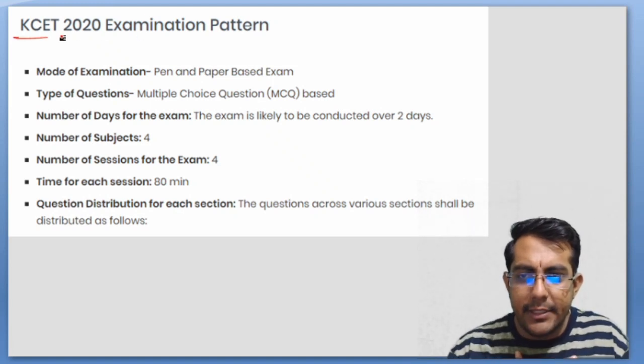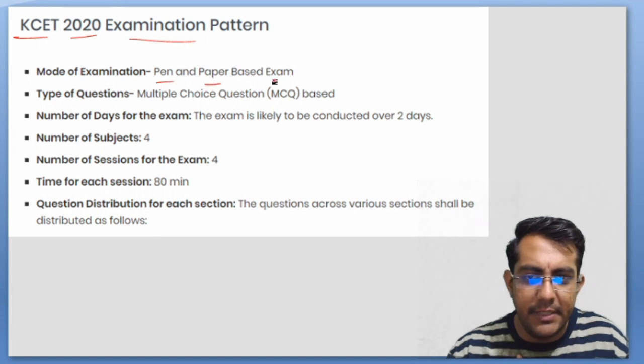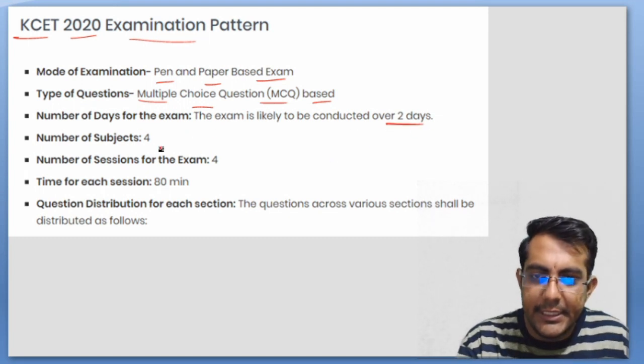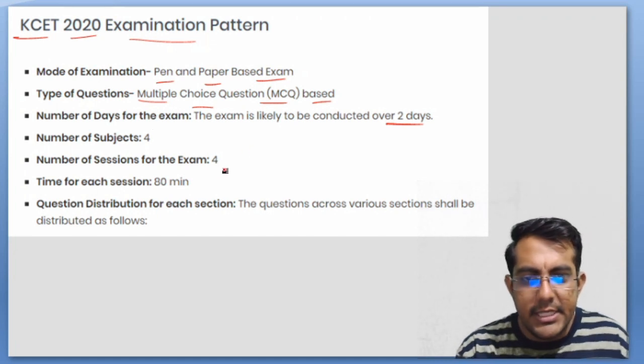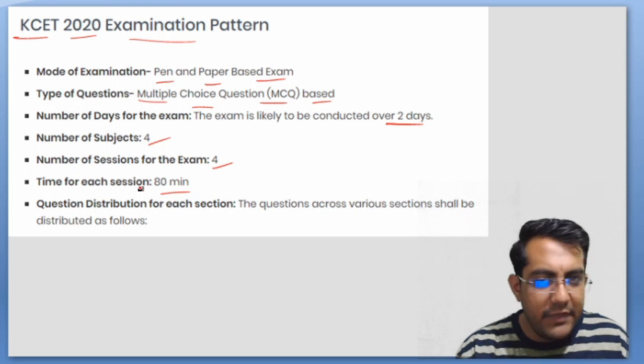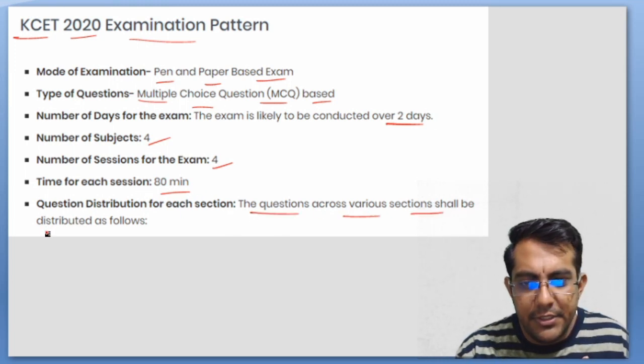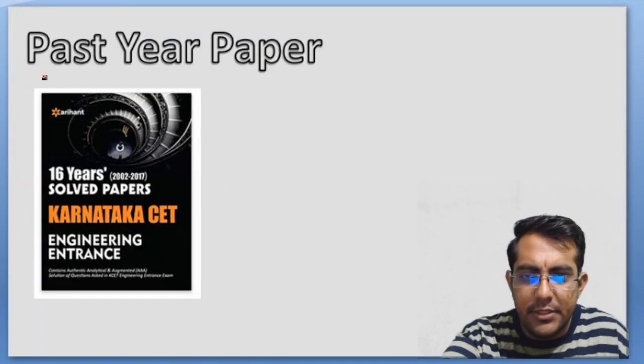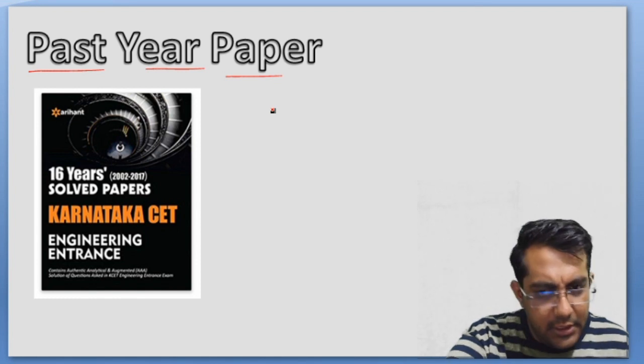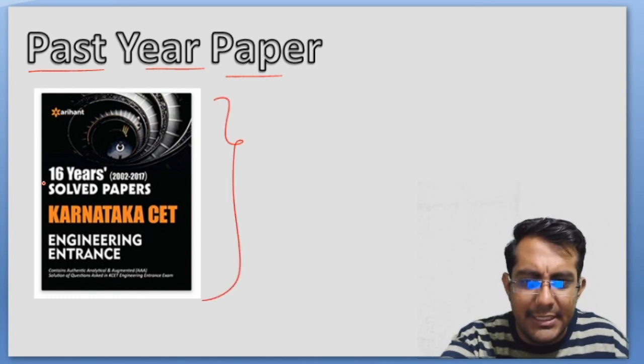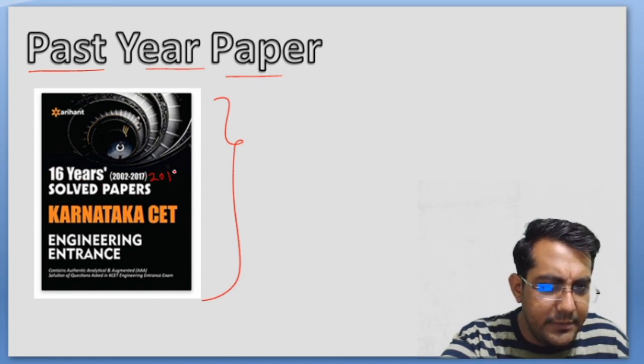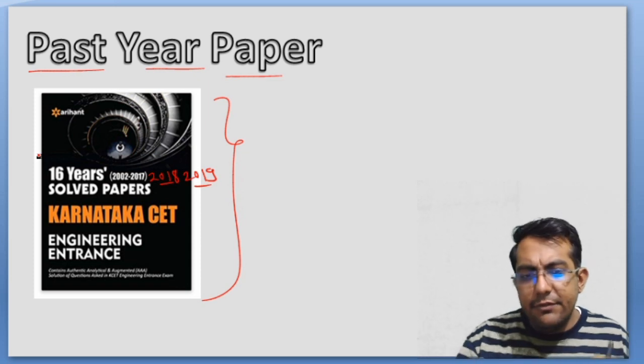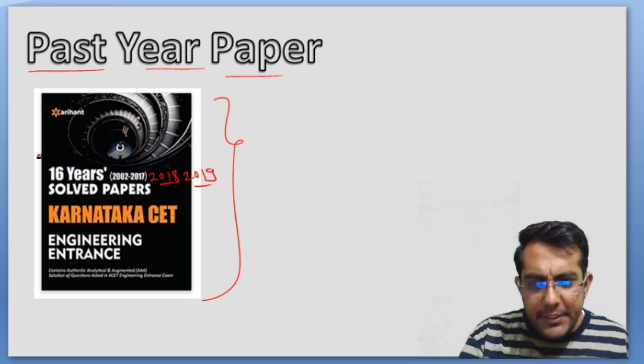When it comes to KCET pattern 2020: mode of examination is pen and paper based, it is multiple choice questions, number of days for examination is most likely two days, number of subjects are four, sessions will be four, time for each session is 80 minutes. You need to follow one book - Arihant Publication past year papers. If you have any local publisher, that's okay too. This is the 2017 edition, so you should consider buying past 18 or 20 years book to get the idea of which chapter gets how much weightage.